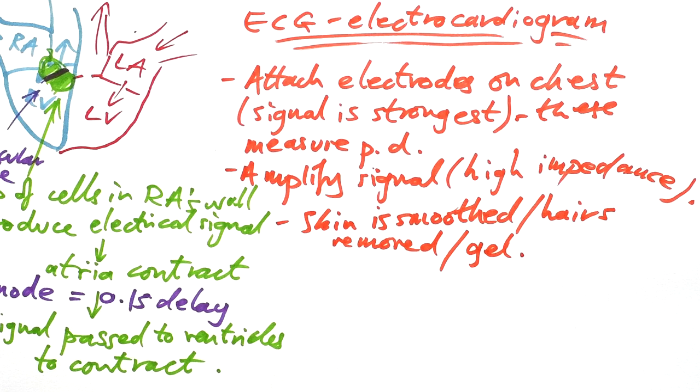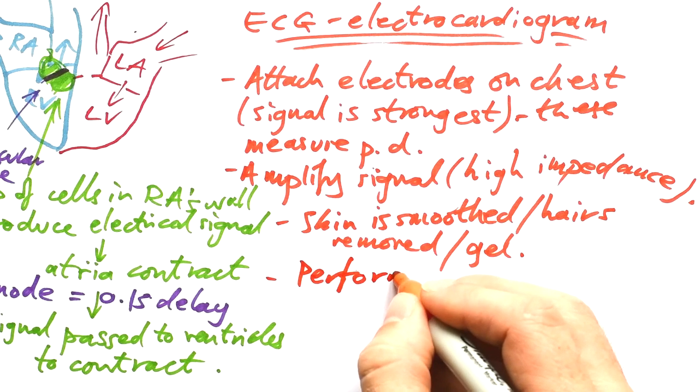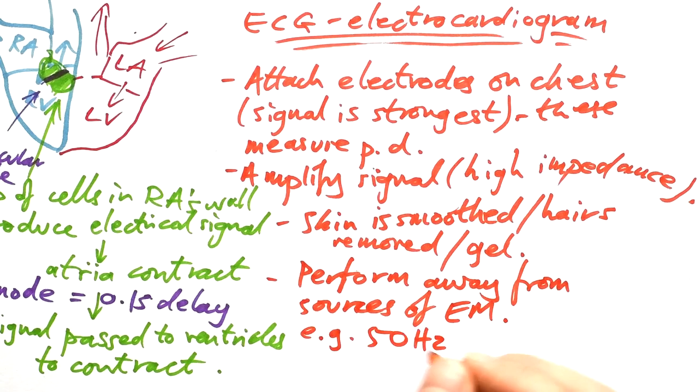Now because an electrocardiograph, that's the piece of equipment that does it, because it's very sensitive, it can actually pick up very faint signals from elsewhere as well. So you should perform it away from sources of EM effectively. If you do an electrocardiogram in a room that's got lots of wires just in the walls, you'll actually pick up a 50 hertz trace from the mains.